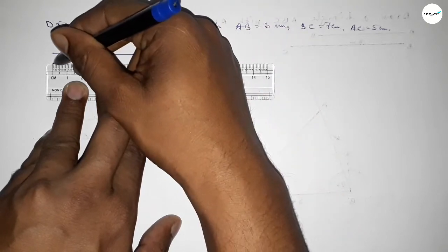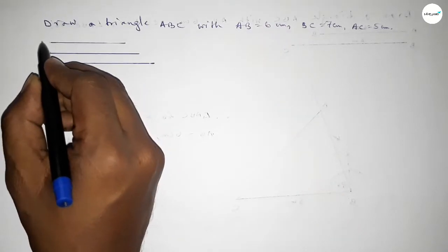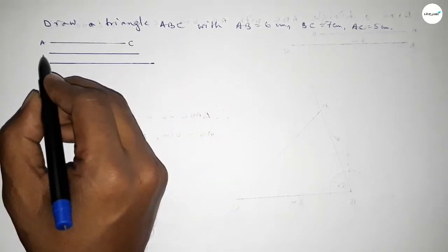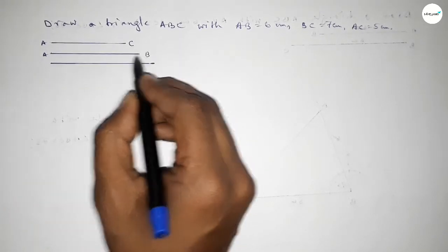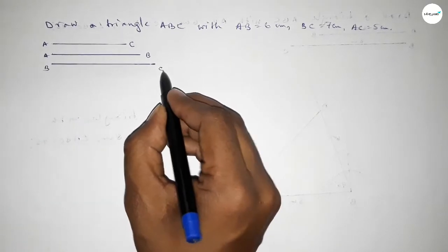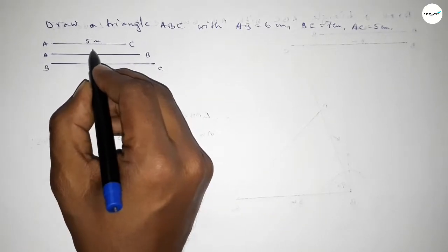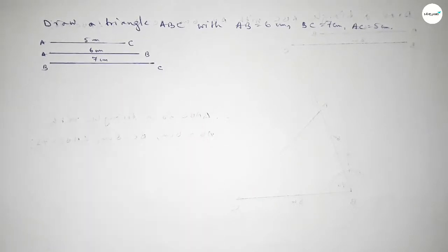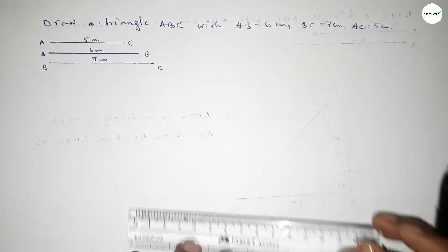Next, drawing here another line 7 centimeter. So this is 1, 2, 3, 4, 5, 6, 7. Okay, so this is AC line and this one AB and last one this is BC. So this one 5 centimeter, this one 6 centimeter, and this line 7 centimeter.